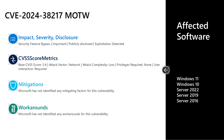Next, CVE-2024-38217. This is an important security feature bypass in Mark of the Web. This was publicly disclosed and exploitation has been detected. It has a CVSS score of 5.4, which is relatively low, but the publicly disclosed and exploitation detected flags raise the overall risk of this vulnerability. The attack vector is over the network, attack complexity is low, privileges required is none, and user interaction is required. There are no documented mitigations or workarounds. The affected software is all versions of Windows in mainstream support — whether it's Windows 10 or 11, or Server 2016, 2019, or Server 2022.